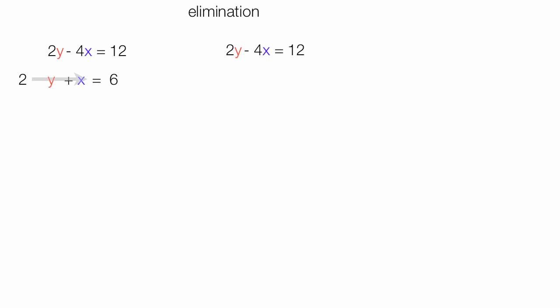I'm going to multiply the bottom equation by two — the y and the x. To balance the equation, I need to multiply the right-hand side by two, or two times six. So two times y is two y. Two times x is, of course, two x.